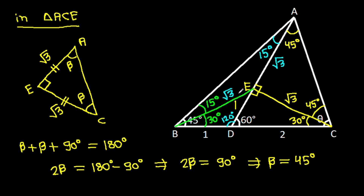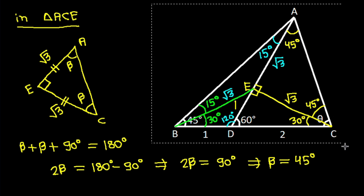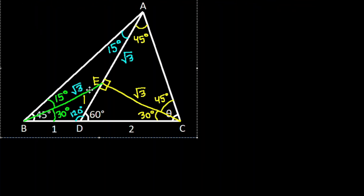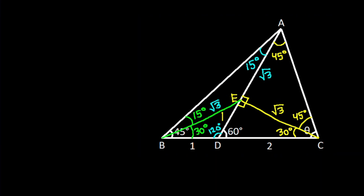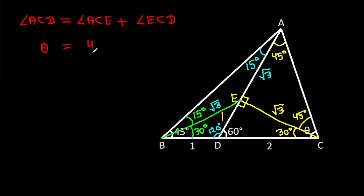Now, angle ACD = theta = angle ACE + angle DCE = 45° + 30° = 75 degrees.